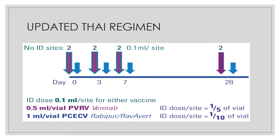Rabies vaccine can be administered by intradermal or intramuscular route. The preferred site for adults is the deltoid area; for children, the anterolateral thigh. Never administer rabies vaccine in the gluteal area. For intradermal dosing, give 0.1 ml per site. For intramuscular dosing, give the entire vial regardless of vial size.